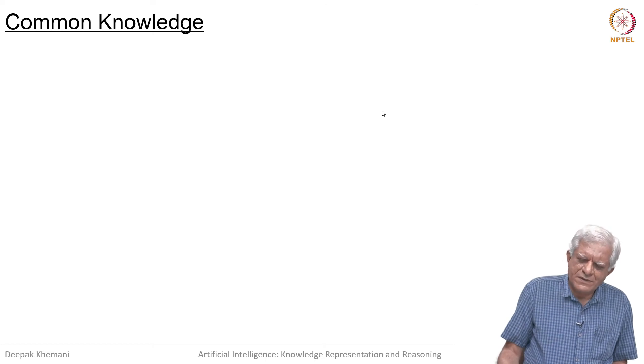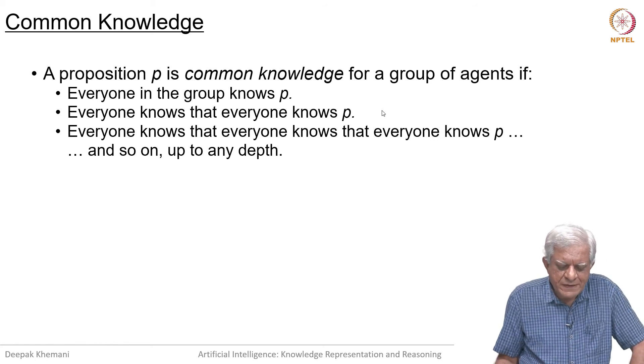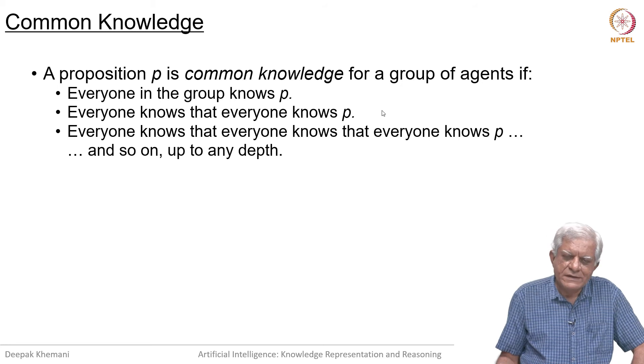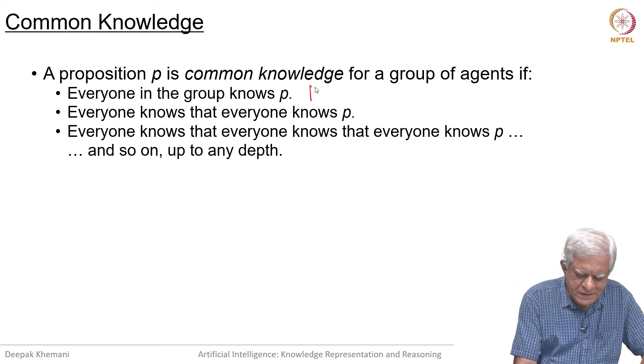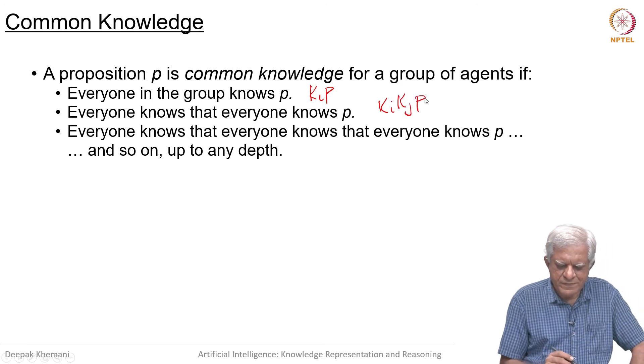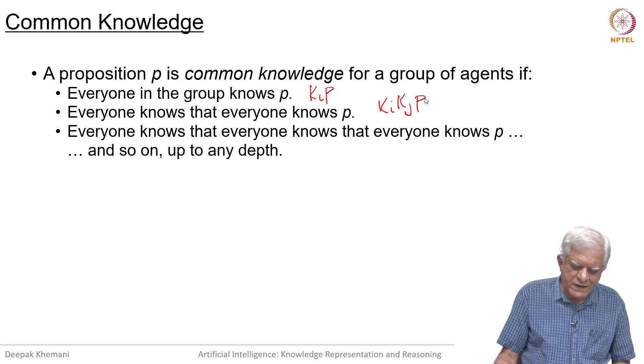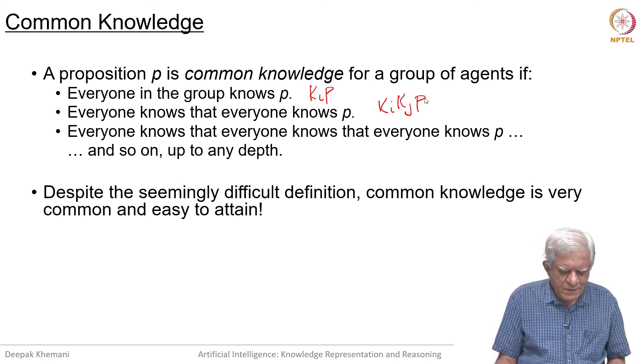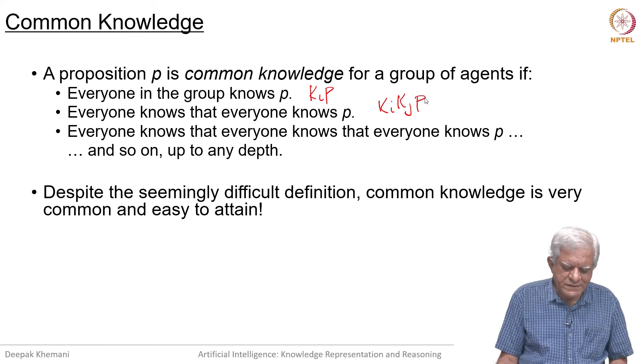In the epistemic logic community, there is something called common knowledge that we often talk about. A proposition P is common knowledge for a group of agents if every agent knows P to start with, then every agent knows that every agent knows P, and so on. You can keep adding these knowledge operators and the statement would be true. Every agent knows that every agent knows - everybody knows what is going on, up to any depth. Despite the seemingly difficult definition, common knowledge is very common and easy to attain.